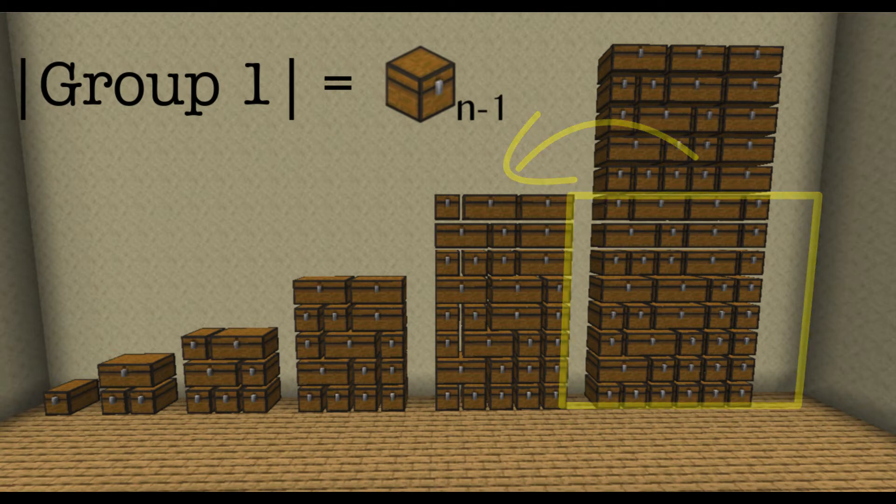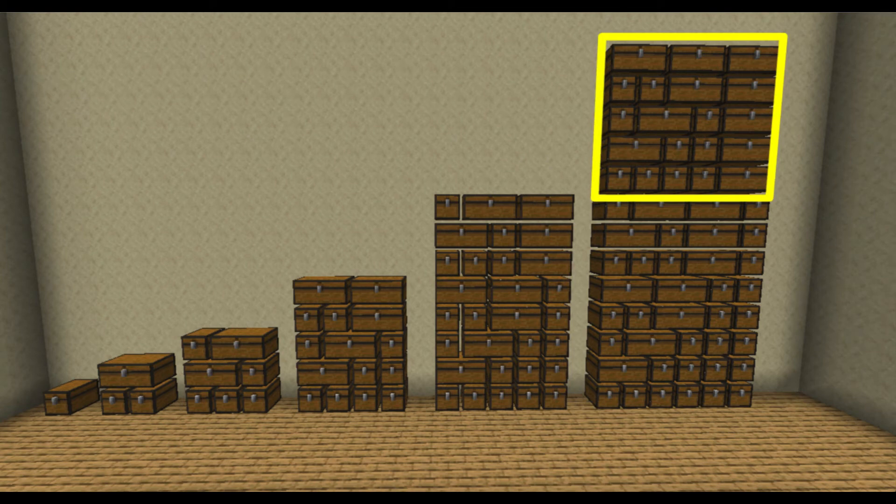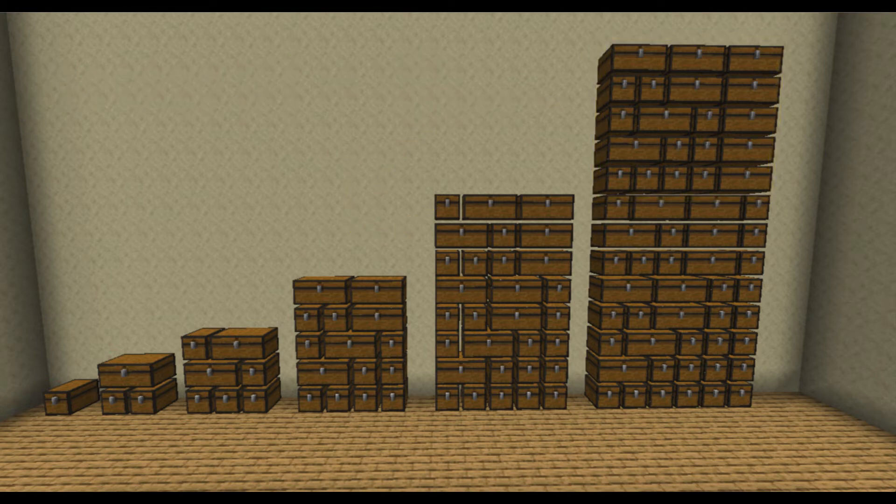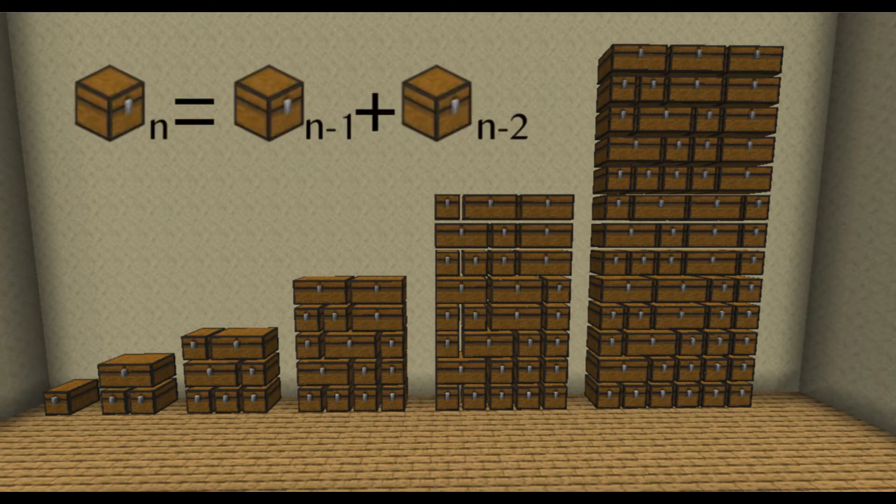And group two contains rows ending in a double chest. There are chest sub n minus two of these. Since these groups are disjoint, we can conclude that chest sub n is equal to chest sub n minus one plus chest sub n minus two.